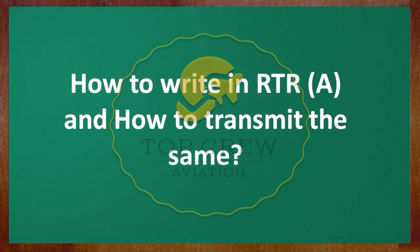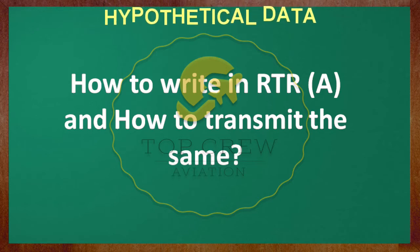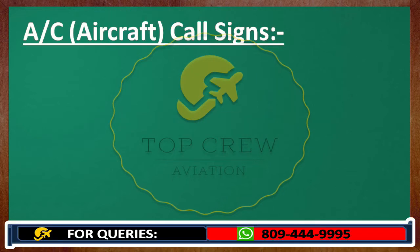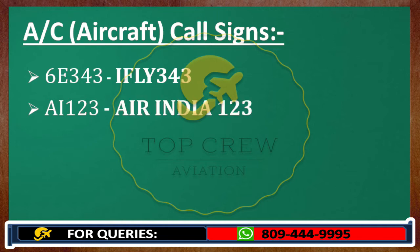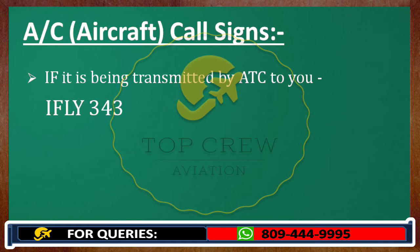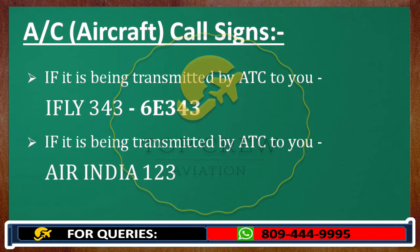Let me make it very clear: we are going to use hypothetical data here. Our objective is to understand in a simple way. We would start with aircraft call signs. For example, if it is written 'iFly 343', we would transmit it as iFly 343. If it is written 'Air India 123', we would transmit it as Air India 123. If ATC is transmitting to you 'iFly 343', we would write it as shown. If ATC transmits 'Air India 123', we would write it as AI 123. This is how we have to write and transmit aircraft call signs.